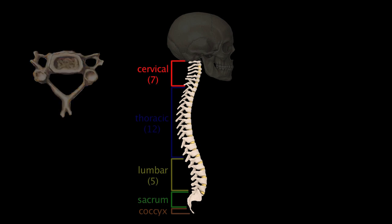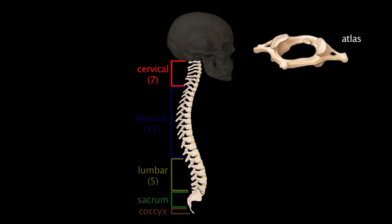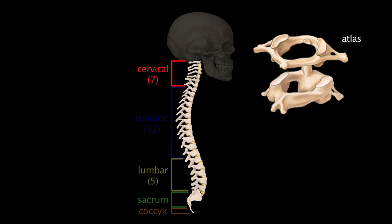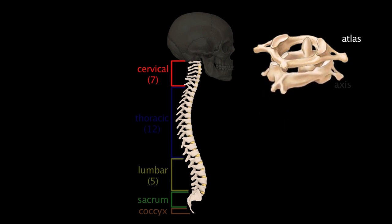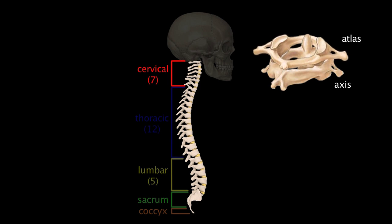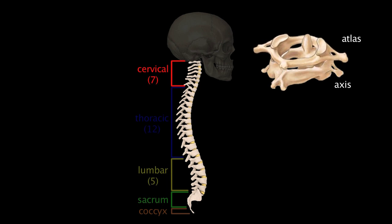The two most superior cervical vertebrae are atypical. C1 is called the atlas. It's unique because it doesn't have a body or a spinous process. Instead, it has lateral masses that articulate with and bear the weight of the skull. C2, called the axis, is the strongest of the cervical vertebrae. The atlas, which carries the skull, rotates on the axis, as when a person turns the head to indicate no. A distinguishing feature of the axis is the blunt, tooth-like process called the dens, which serves as the pivoting point around which rotation of the head occurs.